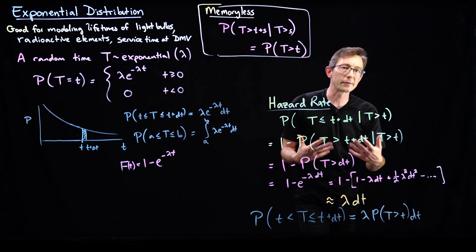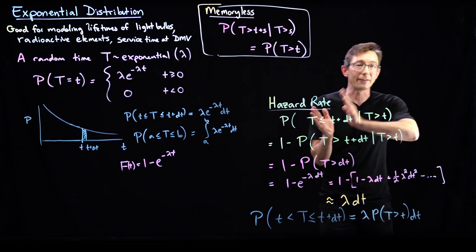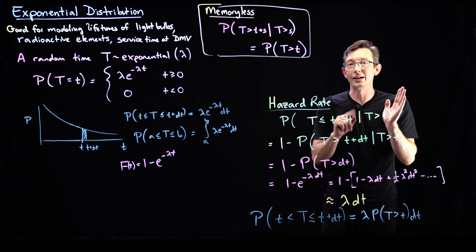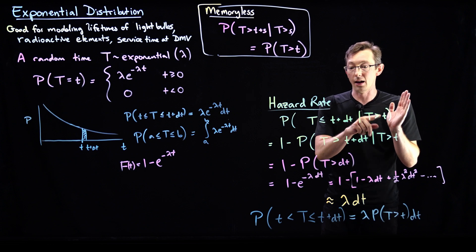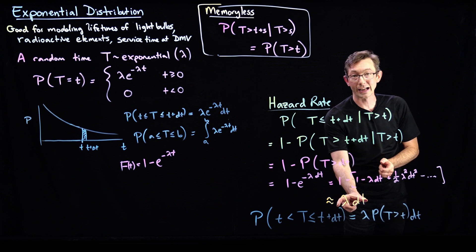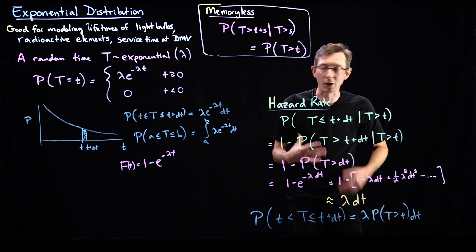But this is a really, really useful property. You use the memoryless property to compute: given that I've already lasted t, I've already lived t, what's the chance of me living another, of me dying in the next delta t? This is the chance of me dying in the next delta t is lambda dt. Really, really interesting property.